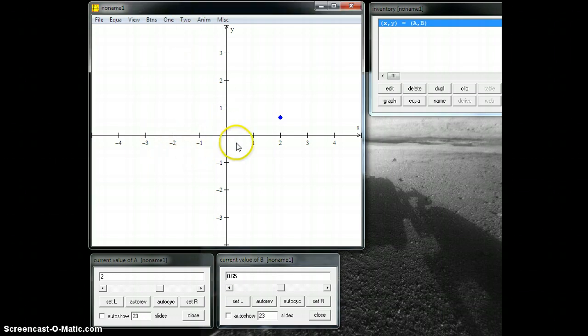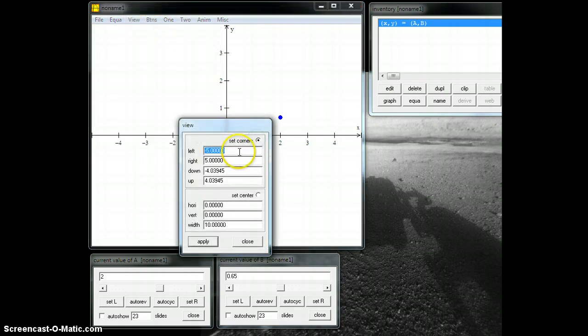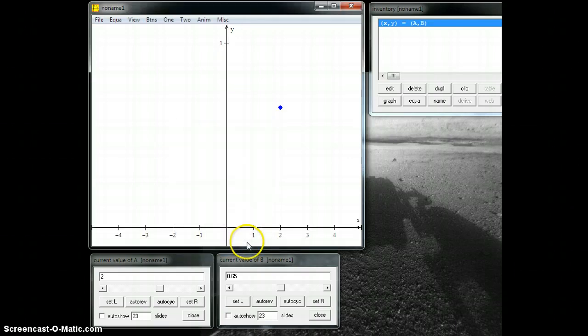Now, let me set some bounds on this here. Let me change the view. This is going to go, let's say, negative 5 to 5. Negative 0.1 to 1.1. Here's my data point. I can drag this guy around. So, 2.65. That sounds good.